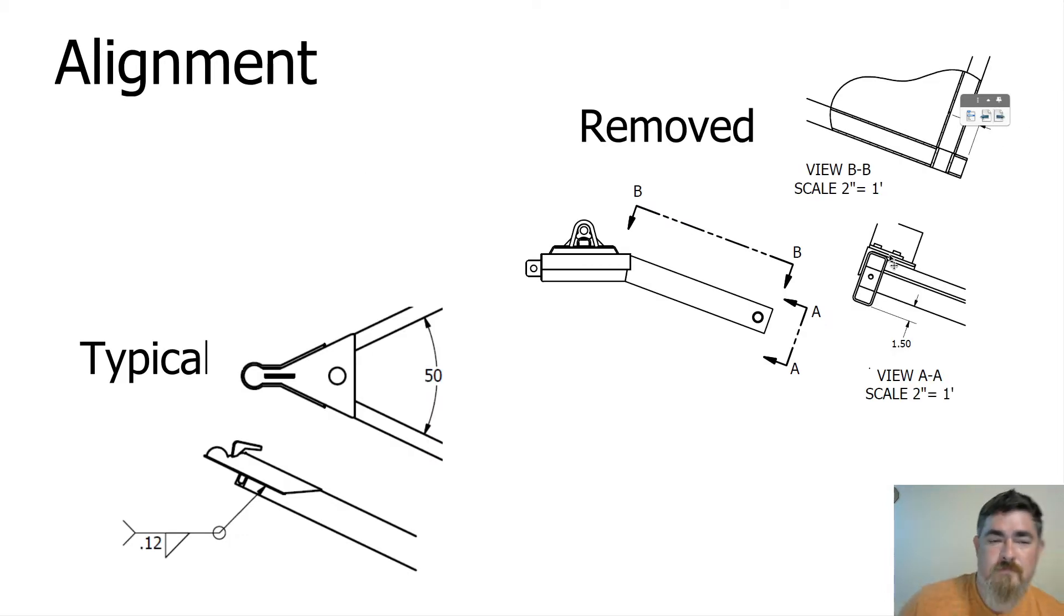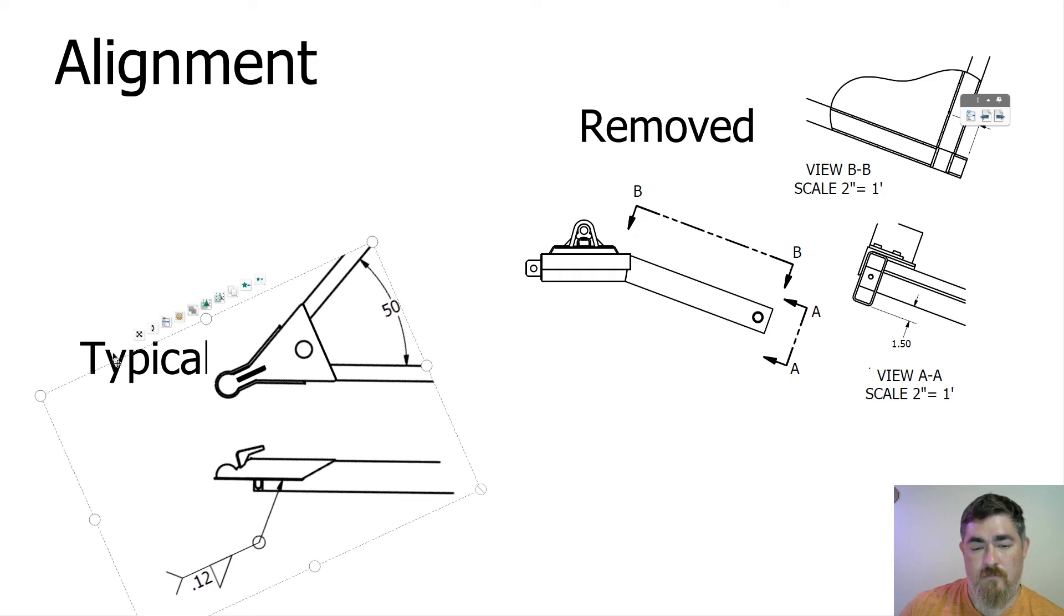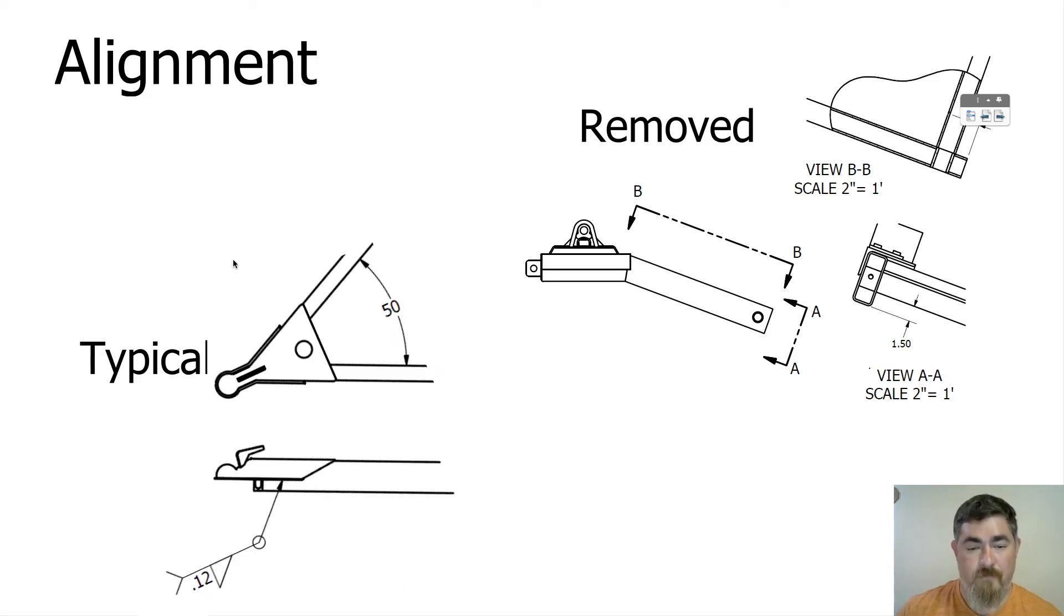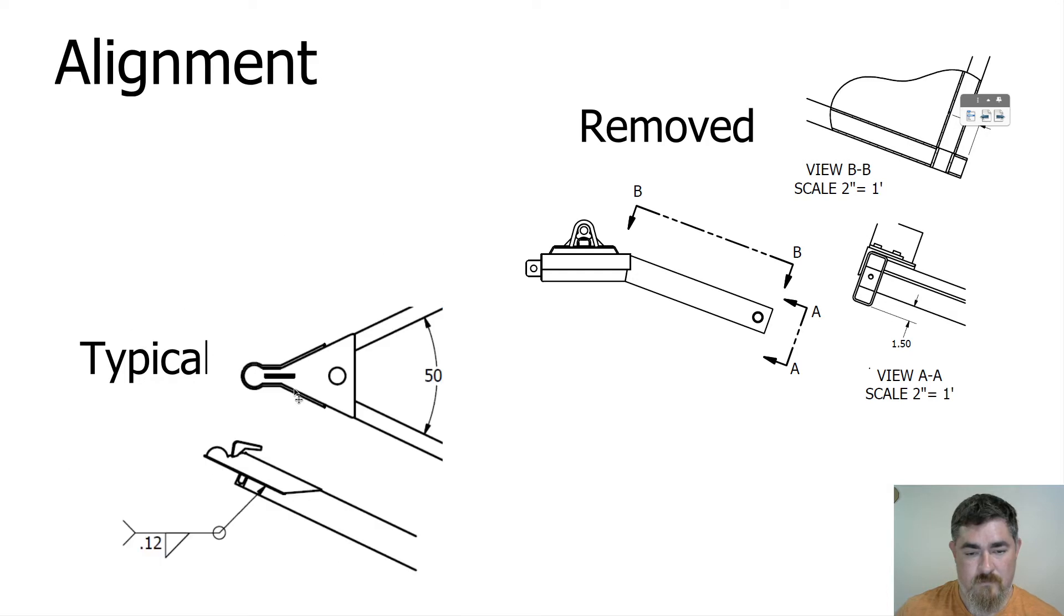So when we have auxiliary views there's two types of ways that are shown. One is in the typical alignment where it's still lined up like if we had done a view there, but because this view is already placed, now this one comes off at an angle instead of being straight down. So it just comes off at the angle so that way we're looking straight at the side of this beam here.